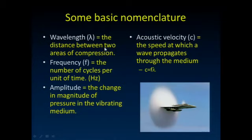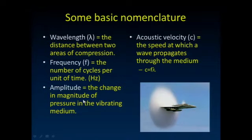Some basic nomenclature: the wavelength is the distance between two areas of compression, or between two areas of rarefaction. Frequency is the number of cycles per unit time. Acoustic velocity is the speed at which the sound wave propagates through the particular medium. Amplitude — the magnitude of the sound — relates to how densely packed those air molecules are at areas of maximum compression.